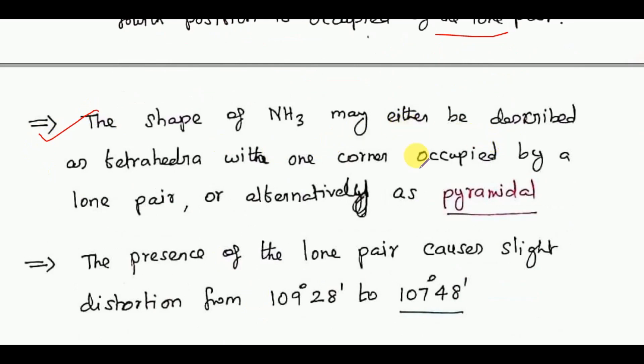The shape of ammonia may be described as tetrahedral with one corner occupied by a lone pair, which is a pyramidal structure. The presence of the lone pair causes slight distortion from 109 degrees 28 minutes to 107 degrees 48 minutes.